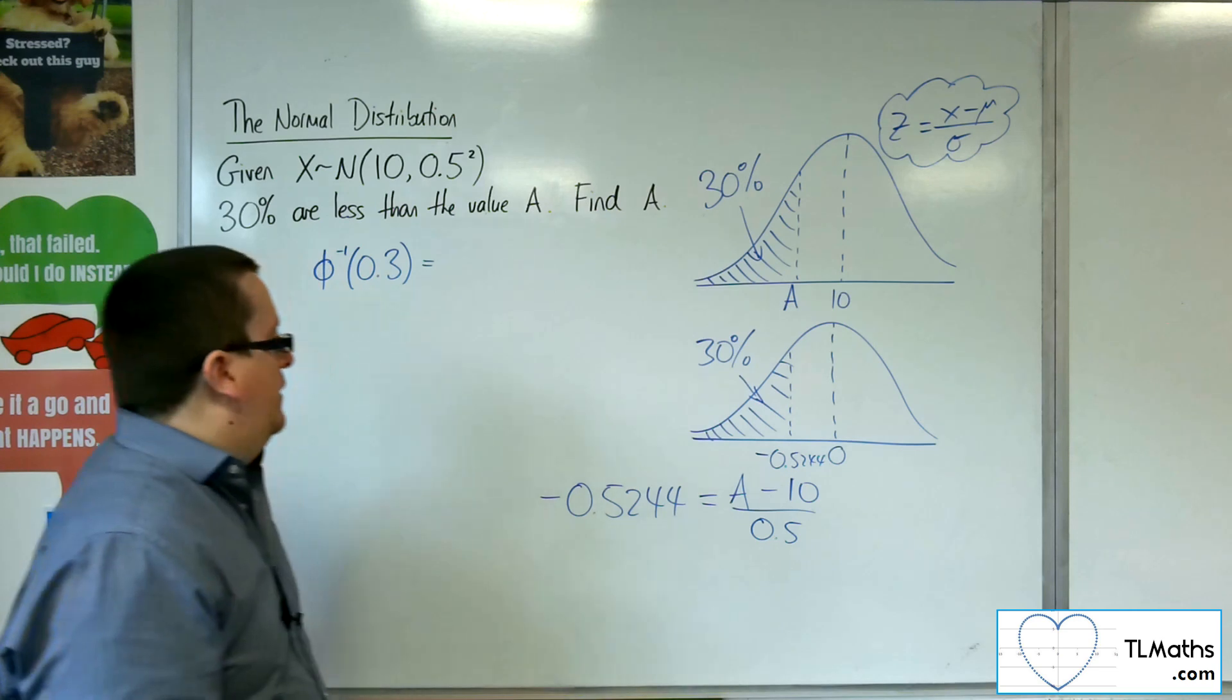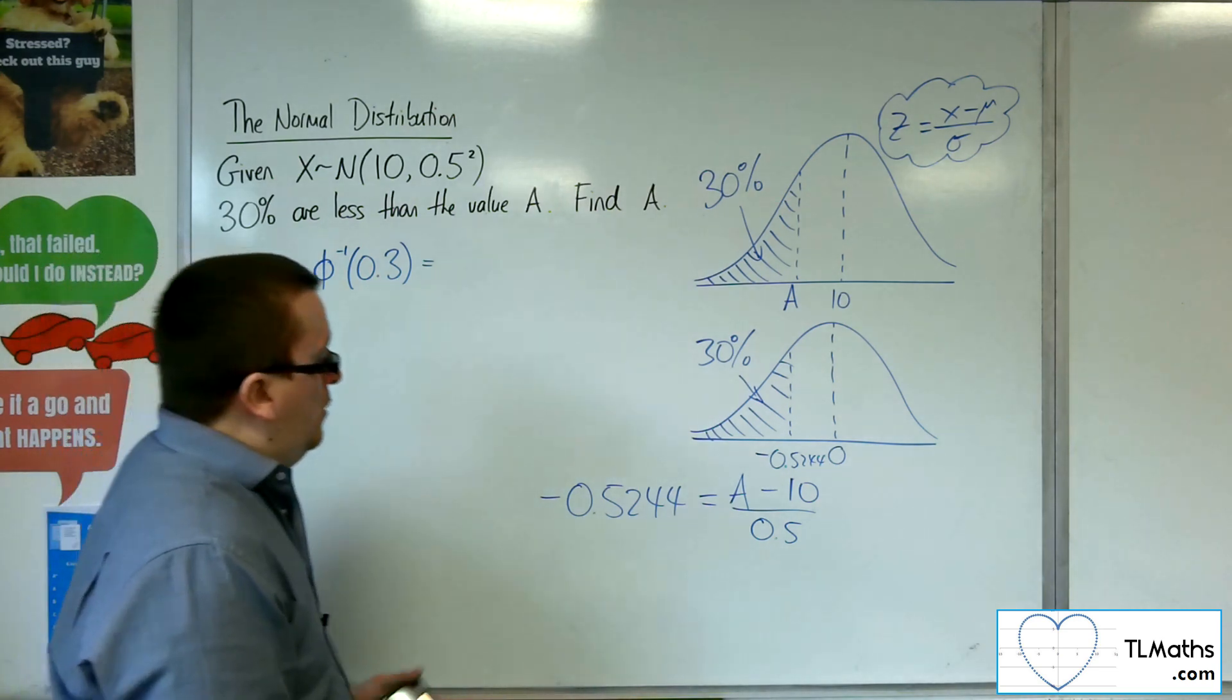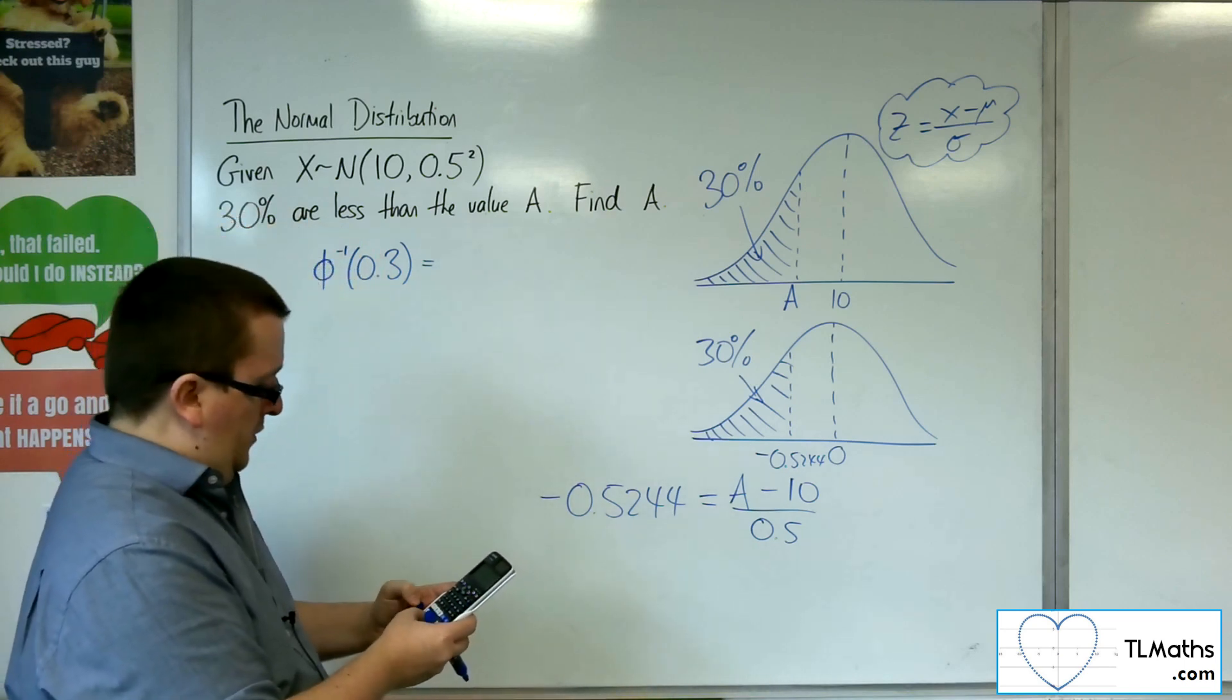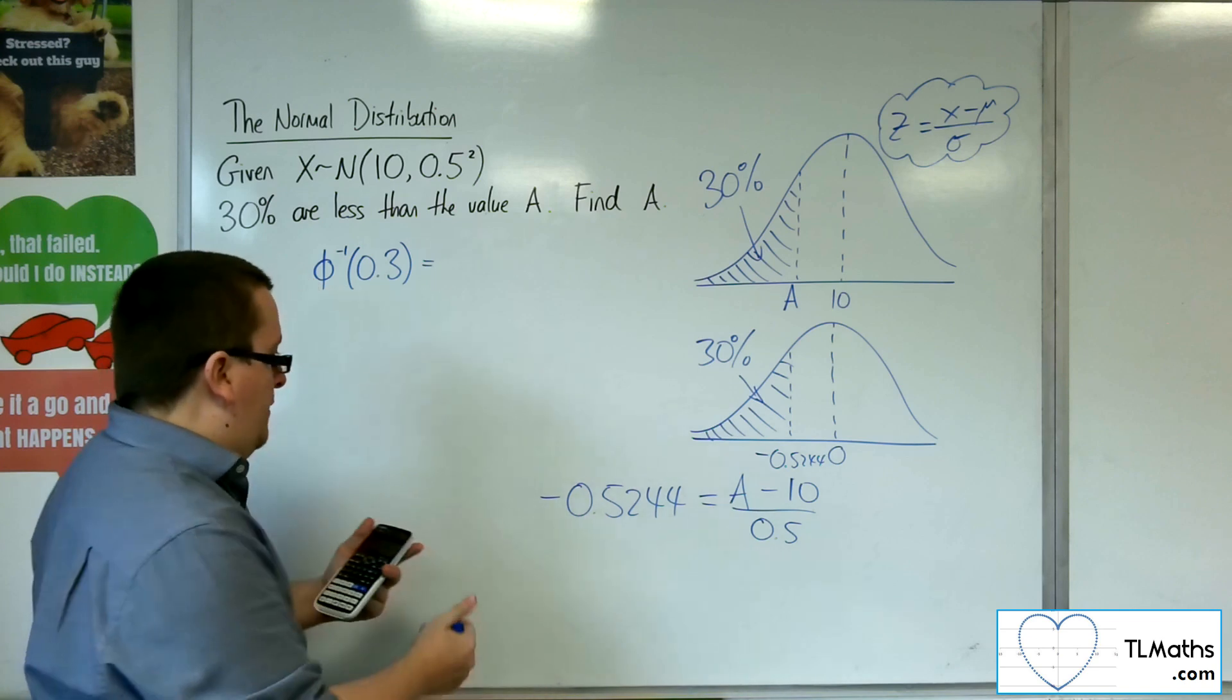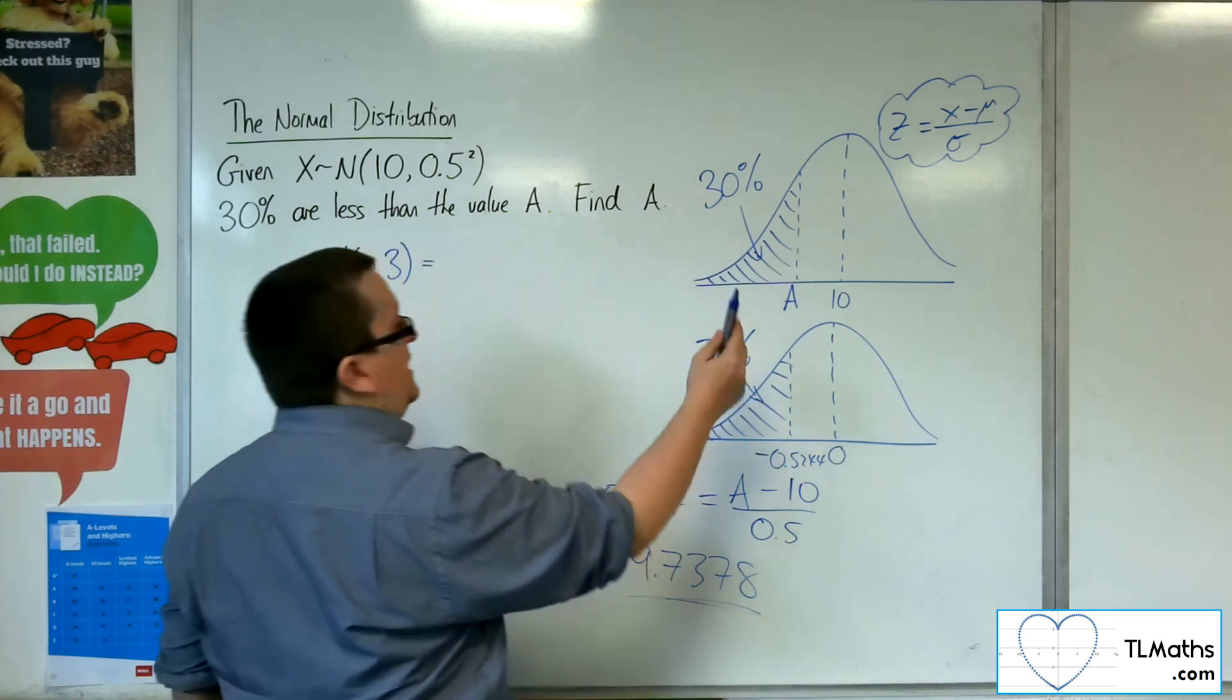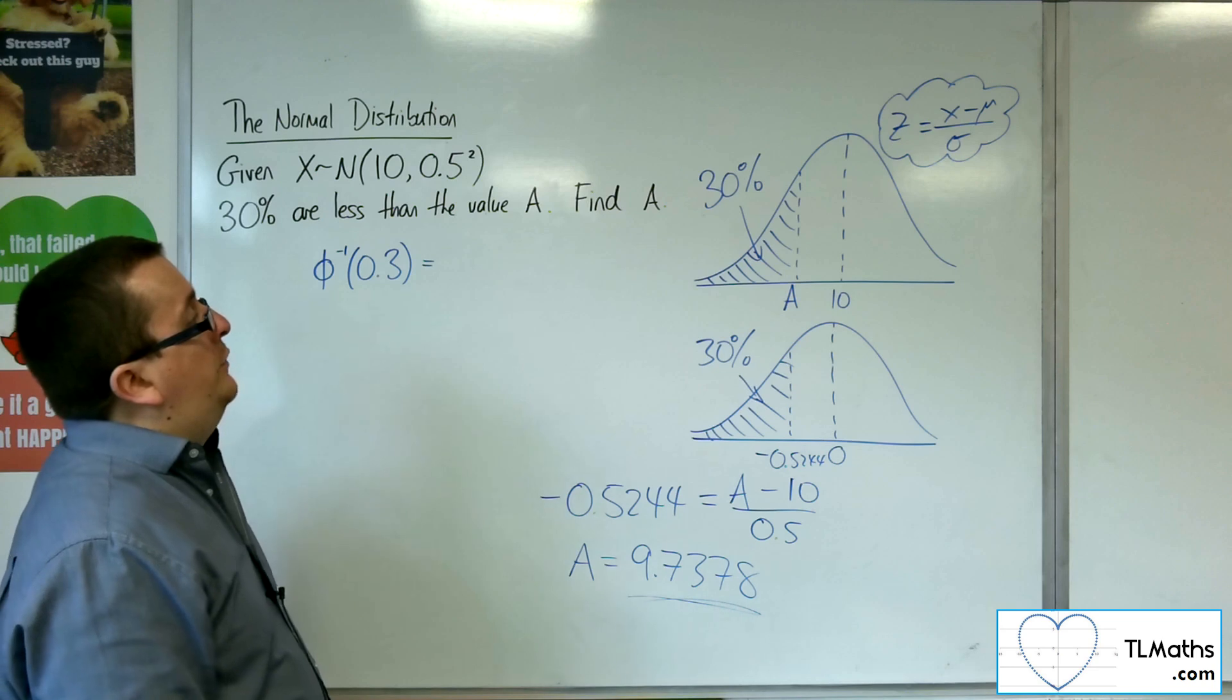So this gives you an equation that you can solve to find A. So, when we do that, if we solve that, so minus 0.5244 times by 0.5 plus 10, and we get a value for A as 9.7378. So as we anticipated, it was to the left of 10. Using that formula.